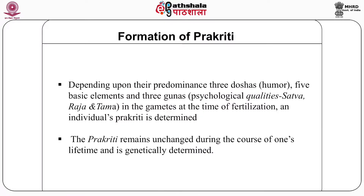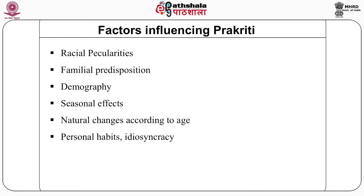We should understand how Prakriti is formed. The three dosas, the five basic elements (Pancha Mahabhutas), and the three gunas — the psychological qualities of sattva, raja and tama — exist in every human being. Depending upon their preponderance in the gametes at the time of fertilization, an individual's Prakriti is determined. The body constitution is fixed at the time of fertilization and generally remains constant throughout the life of the individual. Thus, Prakriti, which is the substratum of the universe, is in turn related to the biological constitution of a person.